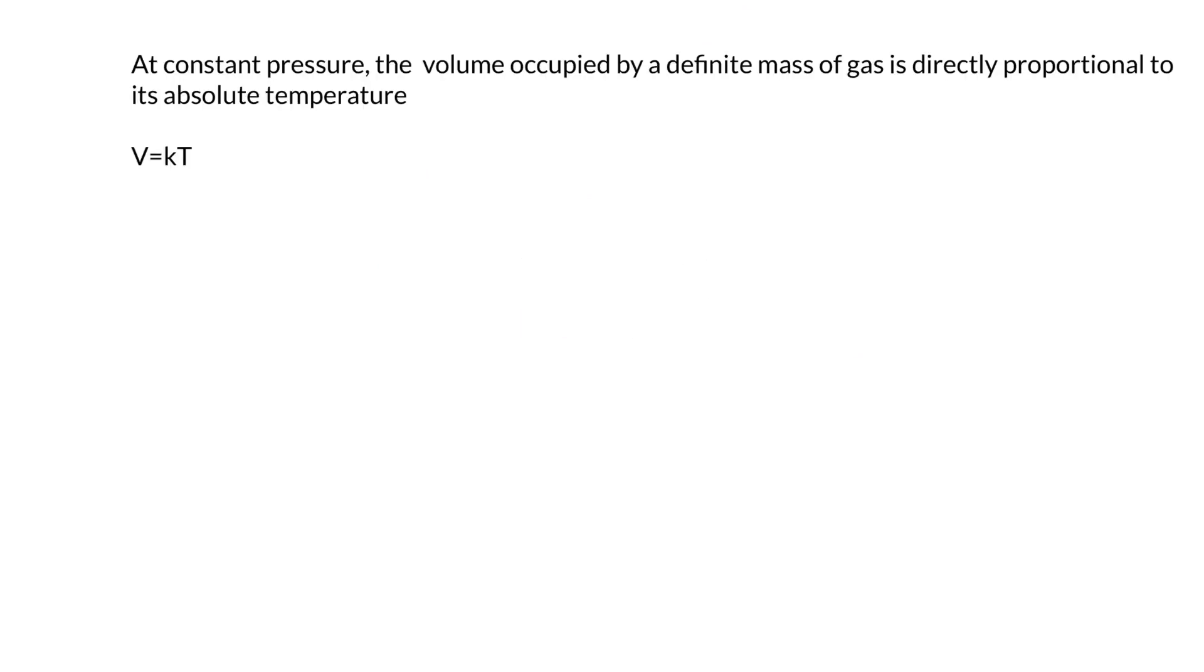This related pressure and volume. There's another gas law that relates volume and temperature, and here the pressure is constant. Volume occupied by a definite mass of gas is directly proportional to its absolute temperature. When you say P1V1 and P2V2, the units should be the same, but here you have to make sure that the temperature you are putting in is always in Kelvin.